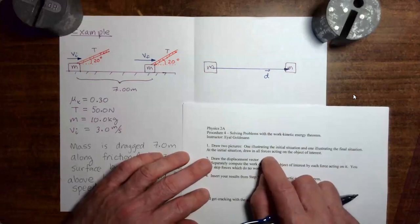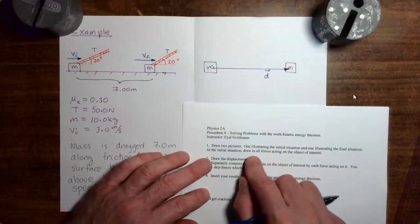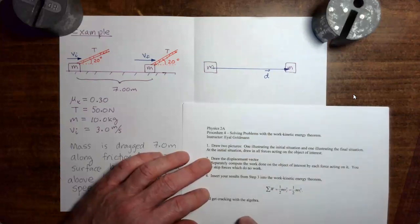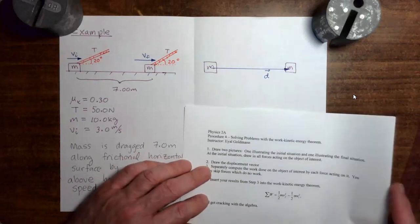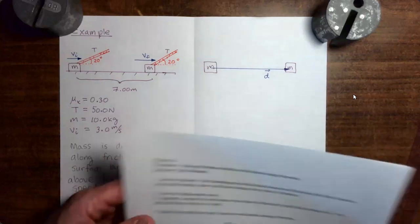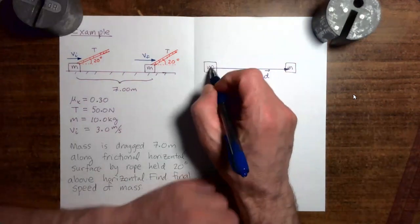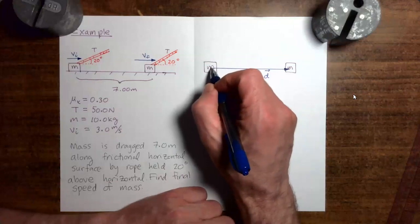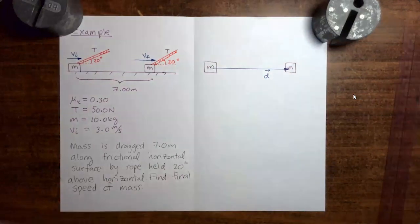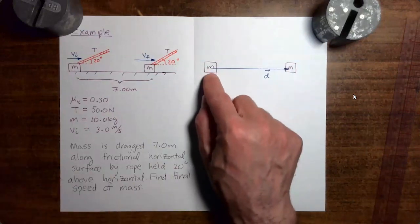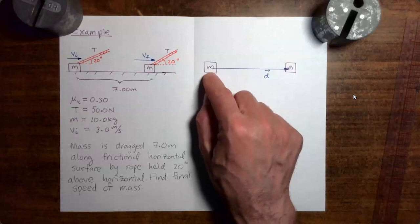Let's go back to step one. Step one says, at the initial situation, draw in all forces acting on the object of interest. So basically what's going to happen is that we're going to go to the initial situation and draw in a force diagram as usual. You can pause the video and do your best to draw in your own force diagram for the mass in this initial situation.